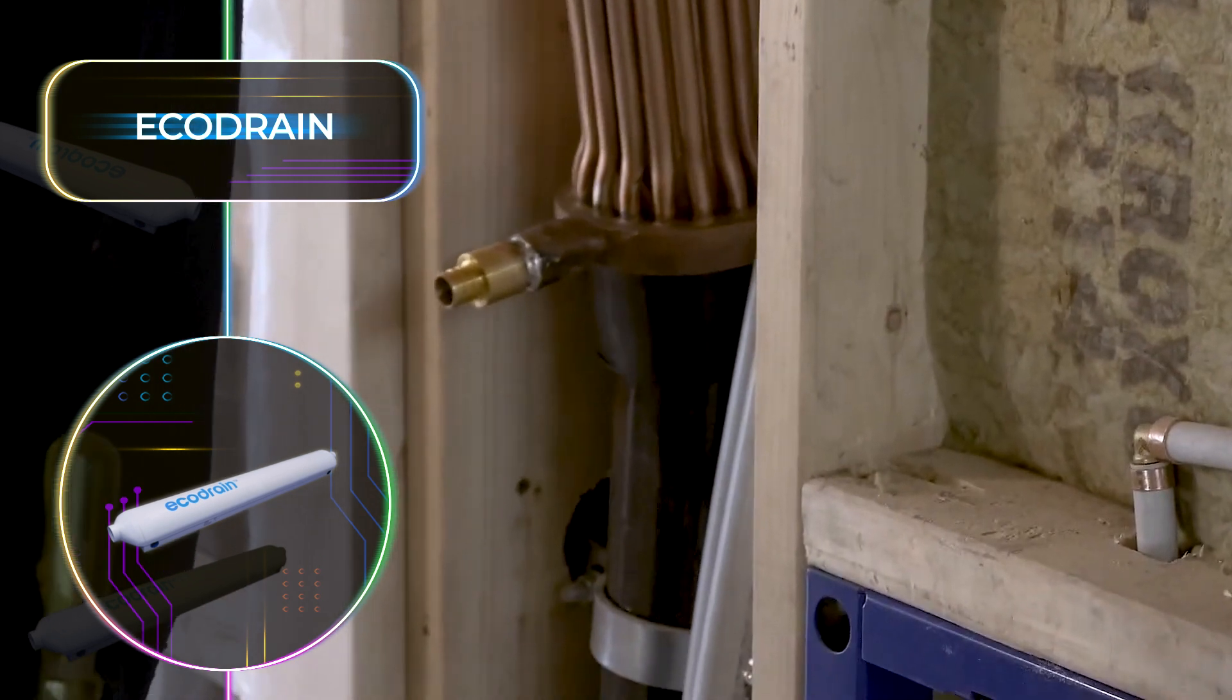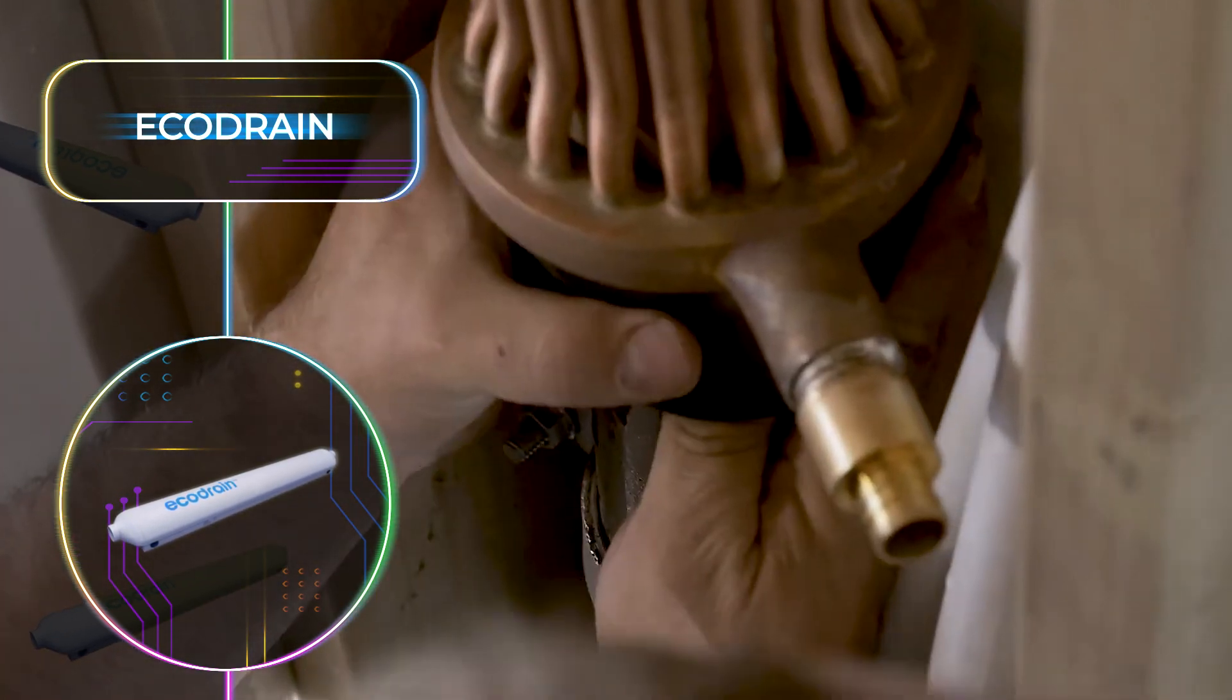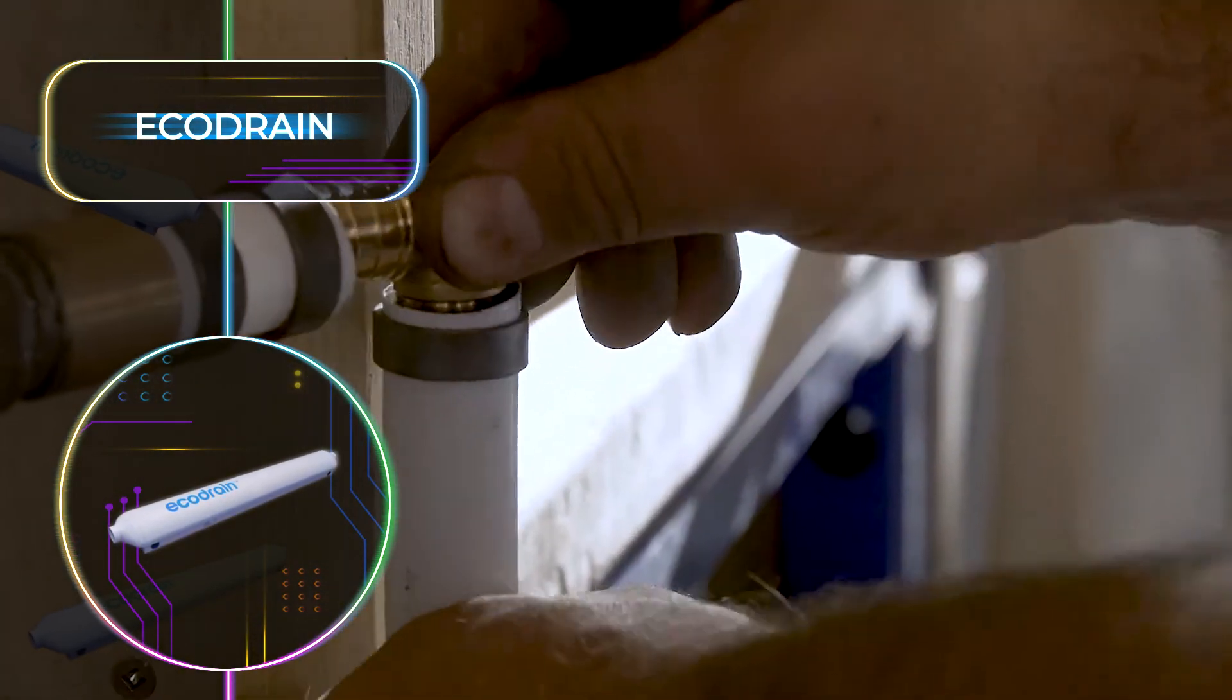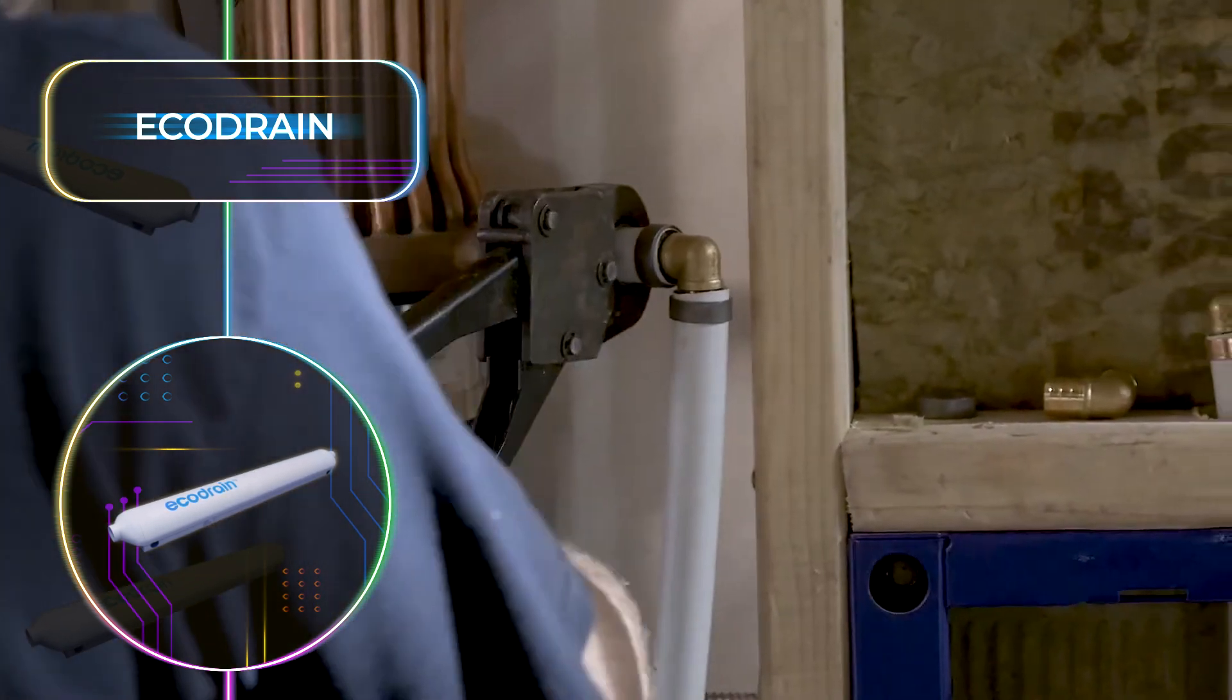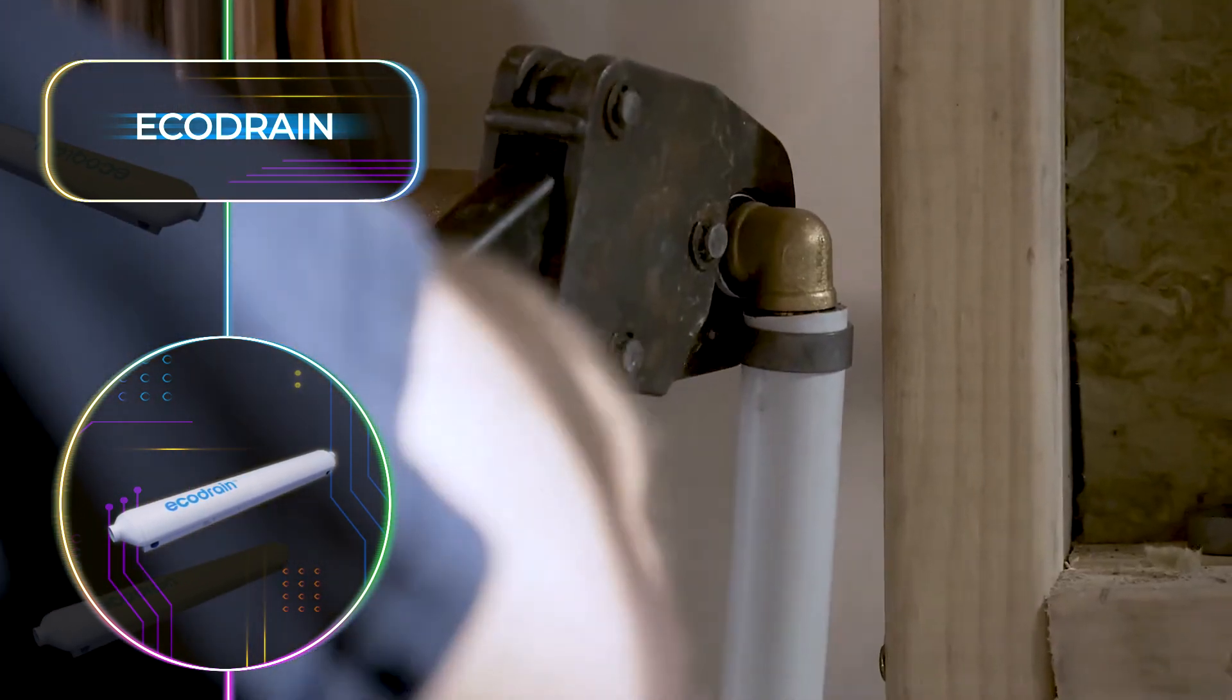The EcoDrain is an innovative tool designed to connect to your drainage system. It's capable of capturing an impressive 45% of the heat from the hot water that goes down the drain. This heat is utilized to warm up the water headed for your water heater.